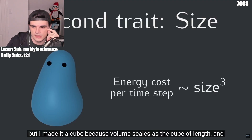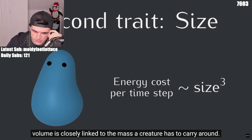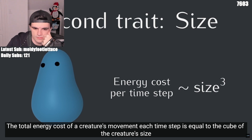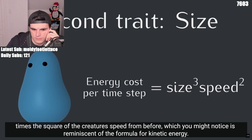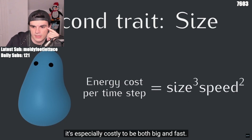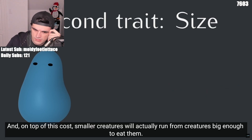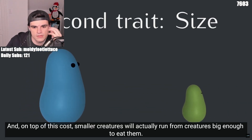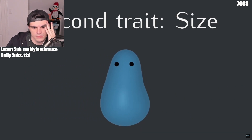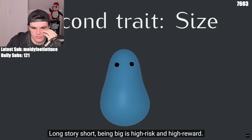The energy cost depends on the cube of a creature's size, because volume scales as the cube of length, and volume is closely linked to the mass a creature has to carry around. The total energy cost of a creature's movement each time step is equal to the cube of the creature's size times the square of the creature's speed — reminiscent of the formula for kinetic energy. It's especially costly to be both big and fast. And on top of this cost, smaller creatures will actually run from creatures big enough to eat them. So to benefit from being big, you need at least some speed. Long story short, being big is high risk and high reward.